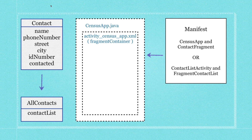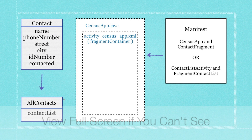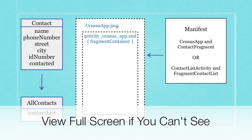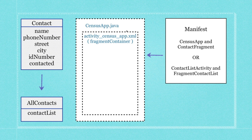In the last part of the tutorial we created Contact. In this tutorial I'm going to be doing a whole bunch of new things. First I'm going to add an ID number and a boolean named `contacted` to see if we contacted the person for our census information. Then I'm going to bundle everything up in an array list inside of a class called AllContacts.